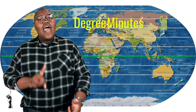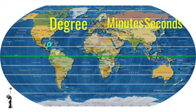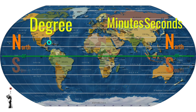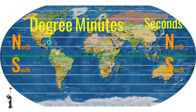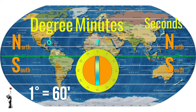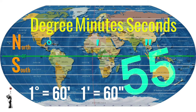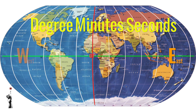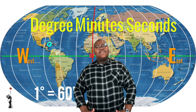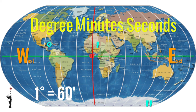Now we'll touch on a more complex concept. Each line of latitude has a degree, a minute, and a second attached to it, tied to the position of that latitude relative to the equator — so north or south. Each degree is divided into smaller units called minutes, indicated by an apostrophe sign. There are 60 minutes in each degree. Each minute is divided into smaller units called seconds, indicated by a quotation mark sign. There are 60 seconds in each minute.